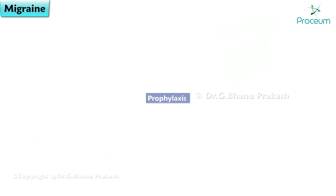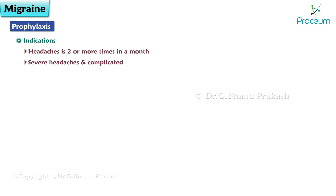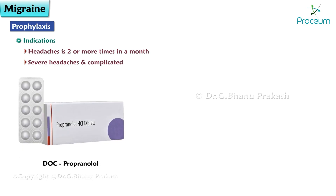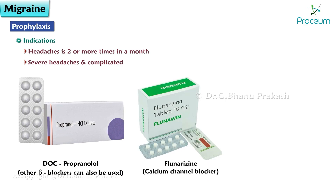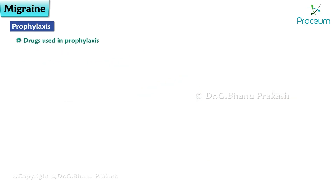Prophylaxis to prevent migraine is indicated if the attack rate is two or more times per month with severe headaches complicated by serious neurologic signs. Propranolol is the drug of choice, but other beta blockers can also be used. Flunarizine, a calcium channel blocker, and methysergide, an ergo alkaloid, can also be used.